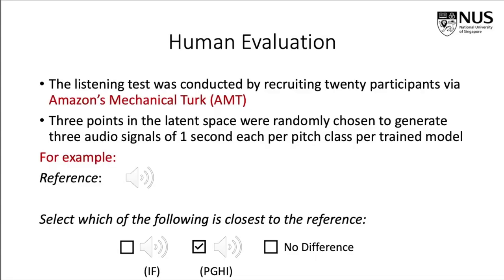To evaluate the quality of the generated sounds, we conducted subjective evaluation through human listening tests on Amazon Mechanical Turk. In each assessment task, participants were asked to listen to a reference drawn from the original dataset, and then to two synthesized audio clips — one from PGHI and one from IF — randomly chosen, and select the one closest in sound quality to the reference, or indicate if they sounded similar.